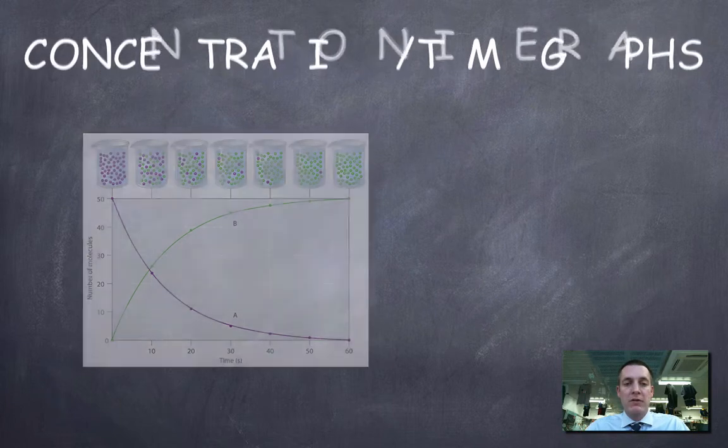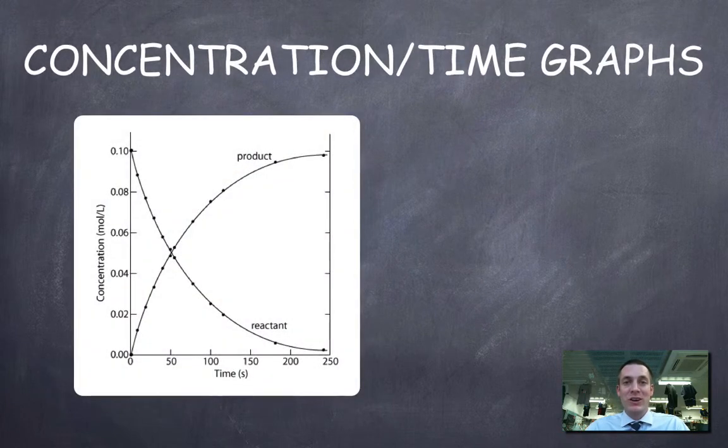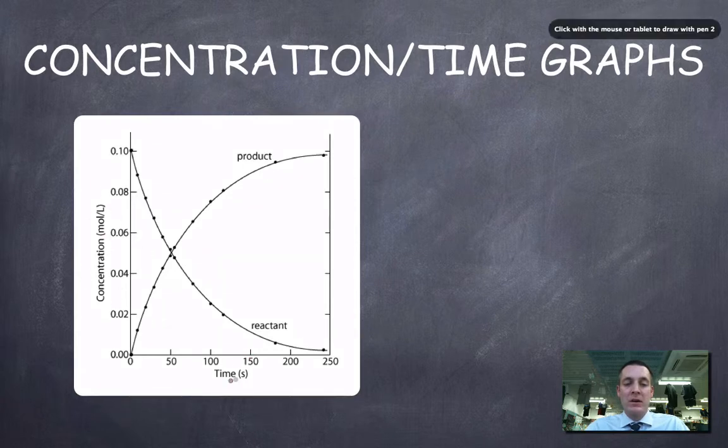So if we now move on and have a look at some actual concentration time graphs, so that is graphs with concentration on one axis and time on the other, here we've got a very similar looking graph showing the product gradually increasing in concentration and the reactant gradually falling in concentration.